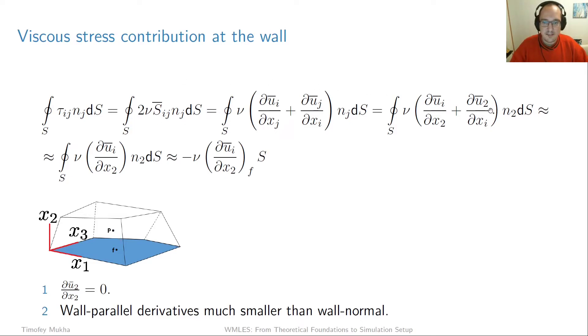All of this has been exact and now we can start introducing some approximations. And the first approximation we're going to make is that the change in the wall parallel directions are significantly slower than in the wall normal. So in other words we're going to just kill off this term. And the only thing which is going to be left is this dui dx2. This is a quite common assumption in boundary layer theory and it holds very well. Typically you have much steeper gradients in the wall normal direction than in the wall parallel.